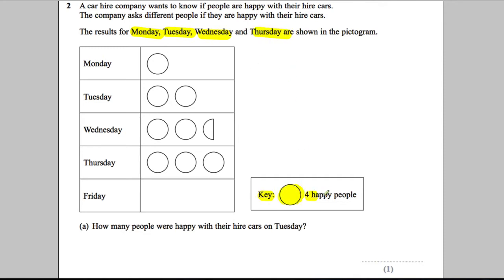The key here says that a full circle is the same as four people. How many people were happy with their car hires on Tuesday? Let's look at Tuesday. On Tuesday we've got two whole circles, so this one's worth four and this one's worth four, so therefore eight people must have been happy on Tuesday.